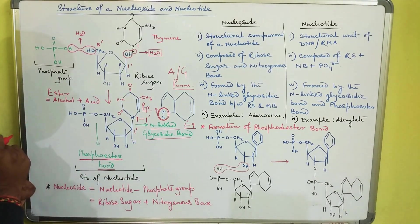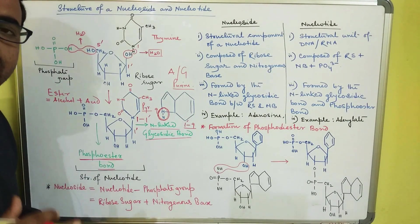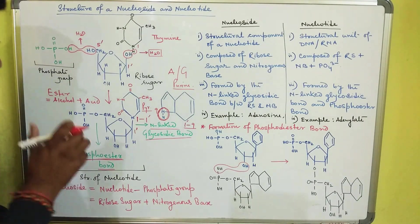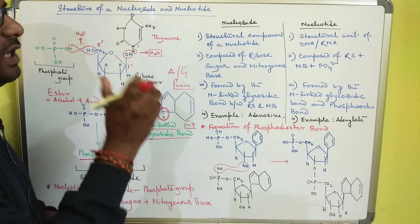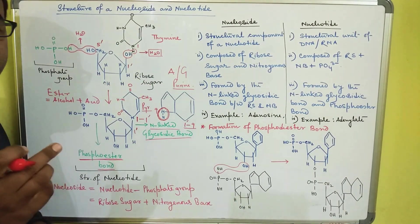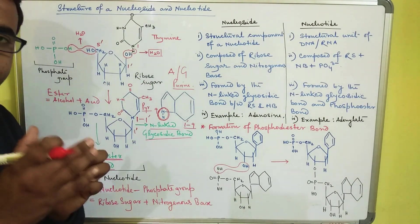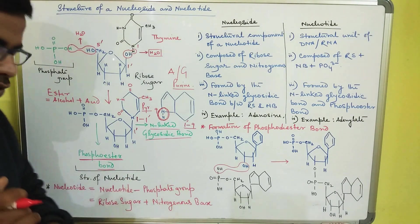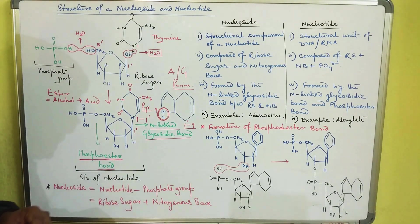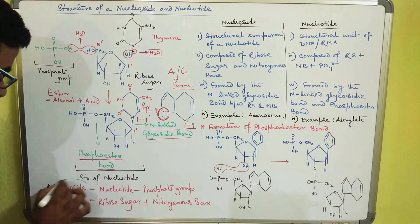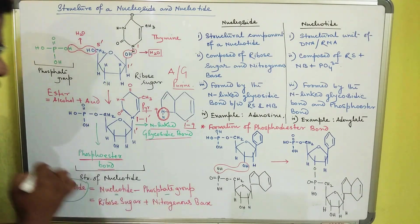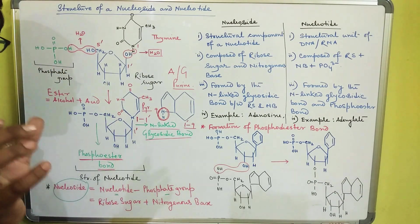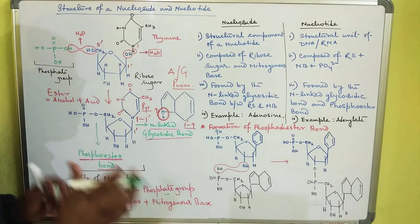Now, what is a nucleoside? A nucleoside is basically a structural component of a nucleotide which is composed of a nitrogenous base and a ribose sugar. You can also say that a nucleoside is a nucleotide minus a phosphate group — if you remove the phosphate group from a nucleotide it becomes a nucleoside.